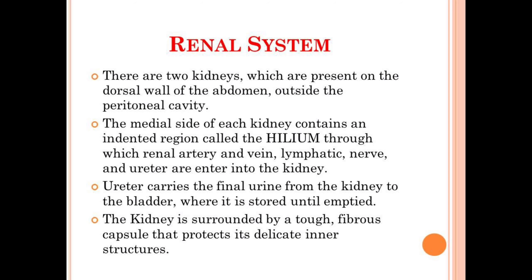So first of all, what is the renal system? It is also known as the urinary system and consists of the kidneys, ureter, bladder, and the urethra. The purpose of the renal system is to eliminate waste from the body, regulate blood volume, blood pressure, control the level of electrolytes, metabolites, and regulate the blood pH. So it is the system that controls a wide range of activities in the animal body. The main component of the renal or urinary system is the kidney.